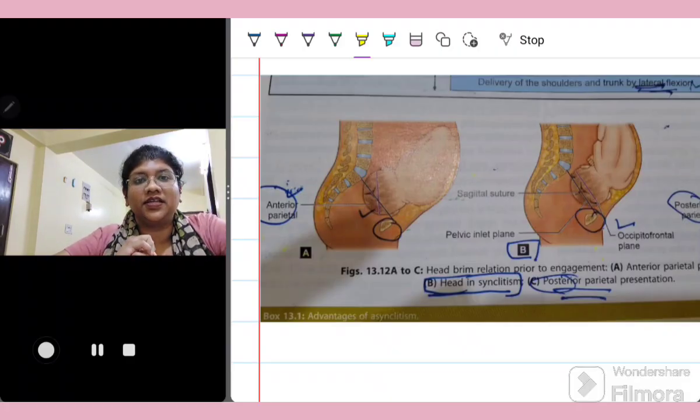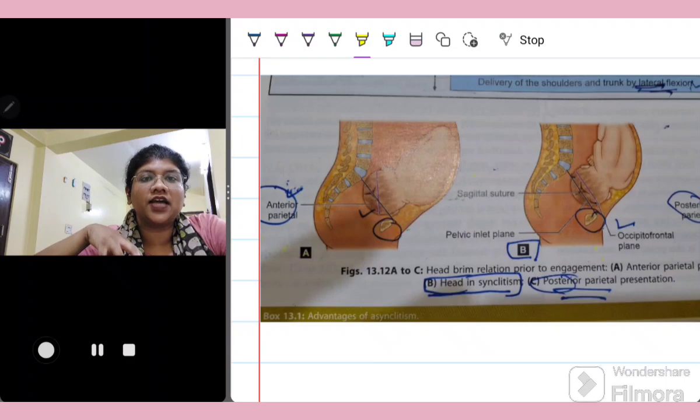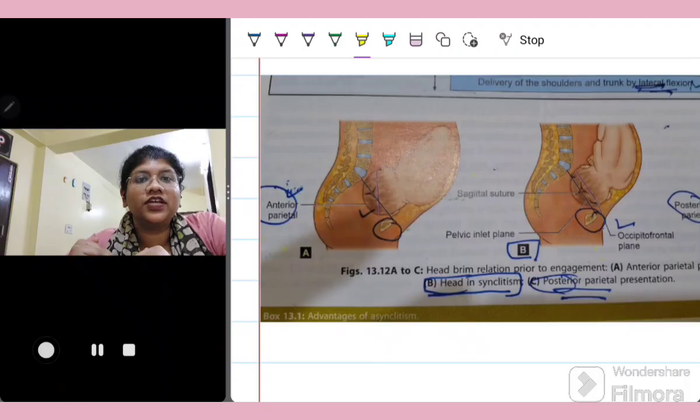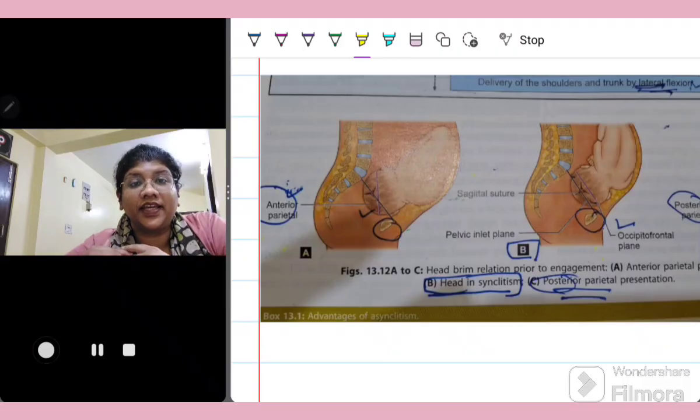Engagement of the head means when the biparietal diameter crosses the pelvic inlet, that is, it is considered at the level of the ischial spines. So when the biparietal diameter crosses the ischial spines, the head is said to be engaged.